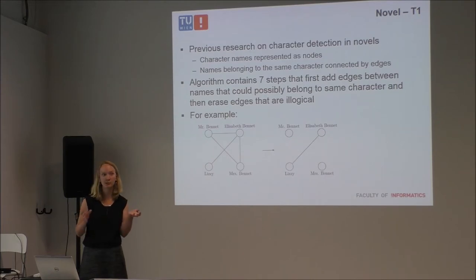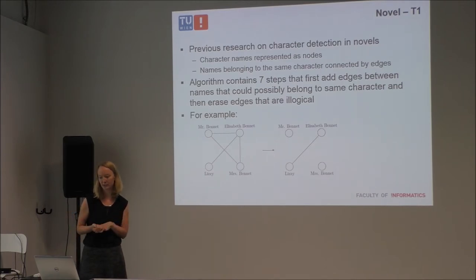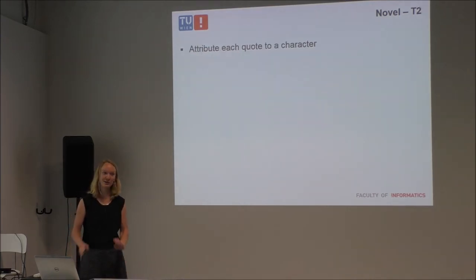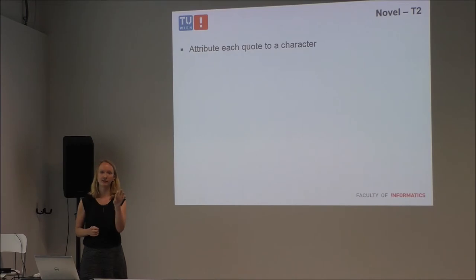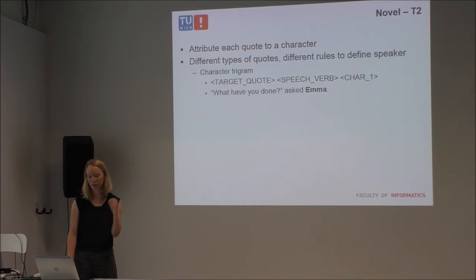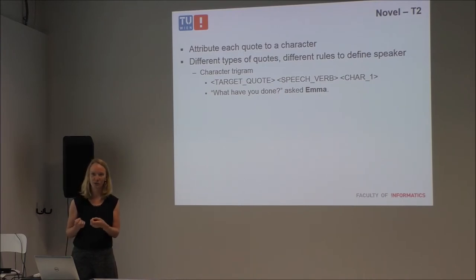Mr. Bennett and Mrs. Bennett cannot be the same character because Mr. and Mrs. indicate different genders. Mr. Bennett and Elizabeth Bennett appearing together in a sentence of dialogue means they cannot be the same character either. After we've determined who the characters are and which names belong to the same one, we need to attribute each piece of dialogue to a character. This is a rule-based approach because there wasn't enough annotated data to use a machine learning approach — initially I wanted to use machine learning but the data just wasn't there.